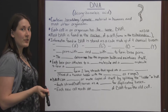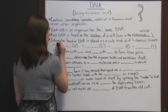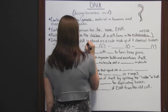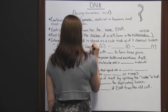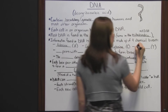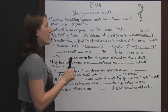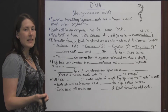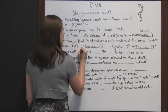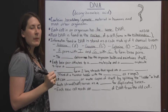That important hereditary information found in DNA is stored as a code made up of four chemical bases: adenine, guanine, cytosine, and thymine. Each one of those bases is only going to pair with one other base. Adenine pairs with thymine, and guanine pairs with cytosine to form base pairs.